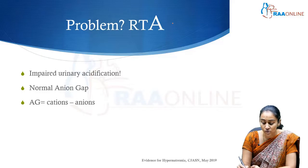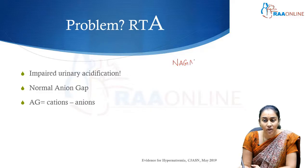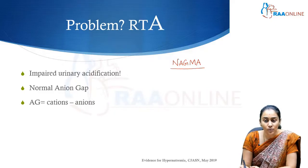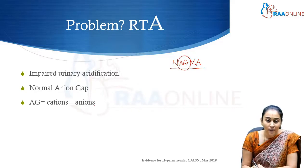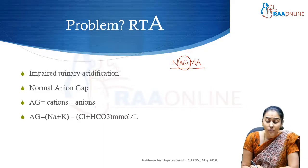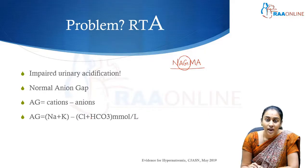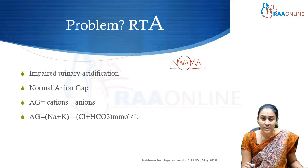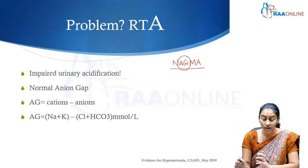This results in normal anion gap metabolic acidosis. Renal tubular acidosis is one of the important differentials for normal anion gap metabolic acidosis, commonly known as NAGMA. The anion gap is essentially the difference between cations and anions. The important cations are sodium and potassium, and the important anions are chloride and bicarbonate. Essentially, the anion gap represents the sum of unmeasured anions.